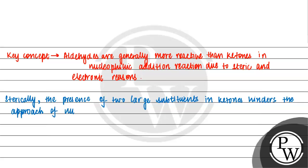If we talk about ketones, two large substituent groups are attached, so our nucleophile is not able to attack the carbonyl carbon. In ketones, the type of carbonyl carbon is more hindered.